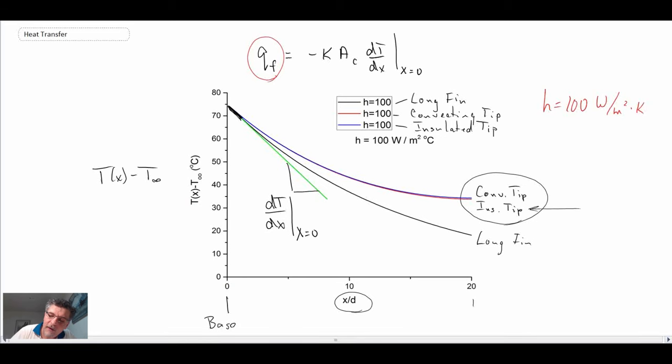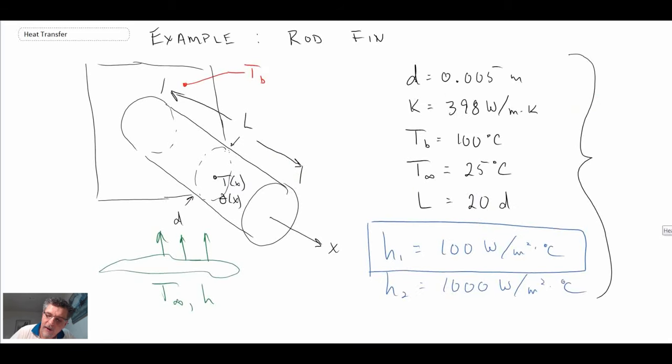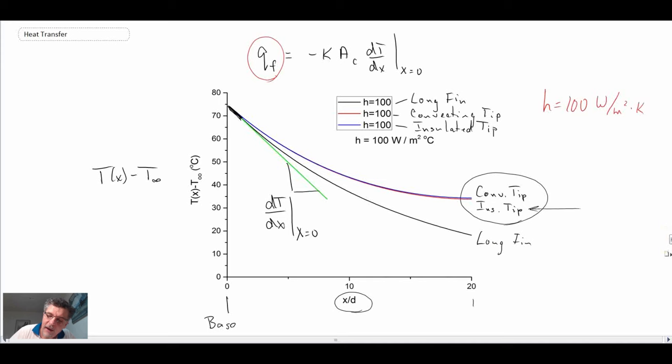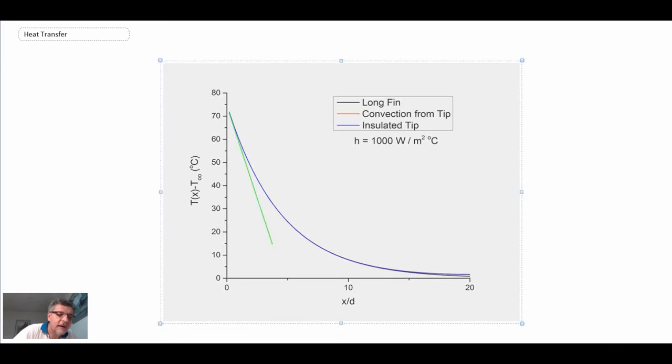Now let's take a look at h equals 1000. And that's what we have here. And first of all, what you notice is our slope is a lot different. We have a much larger convective environment.